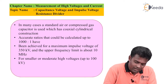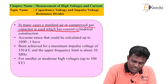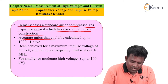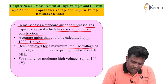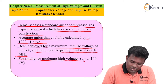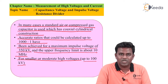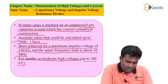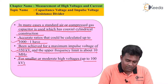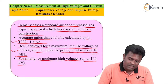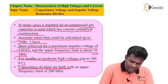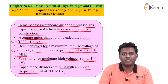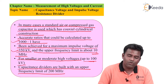In many cases, a standard air or compressed gas capacitor is used, which has coaxial cylinder construction. An accurate ratio that can be calculated up to 1000:1 can be achieved for a maximum impulse voltage of 350 kV, and the upper frequency limit is about 10 MHz for small or moderate high voltages up to 100 kV. These capacitance voltage dividers are used for a ratio of 1000:1, maximum impulse limit of 350 kV, frequency up to 10 MHz, and the capacitance dividers can be built with an upper frequency limit of 200 MHz.